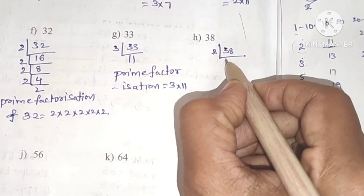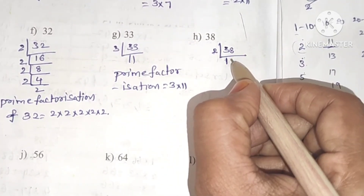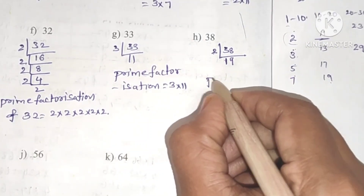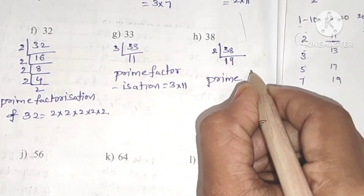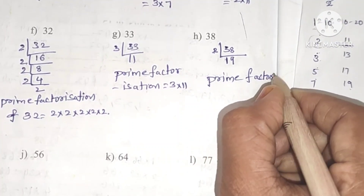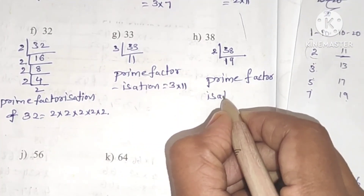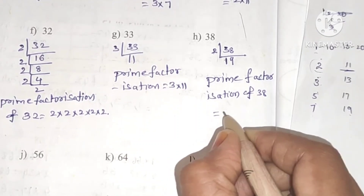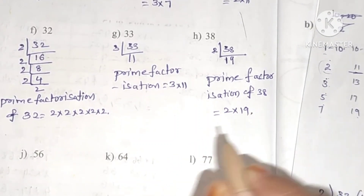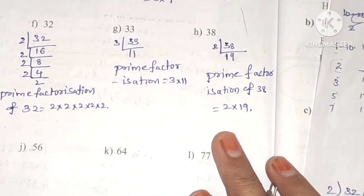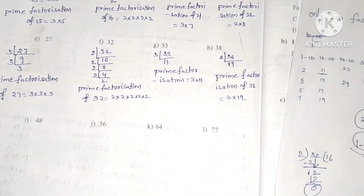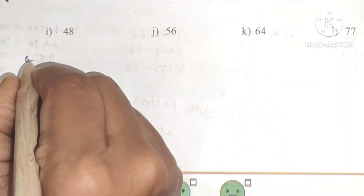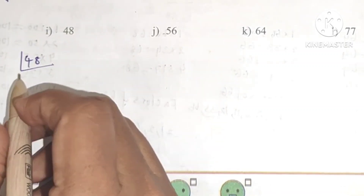For 33, the first prime number 2 does not divide it, so we try 3: 3 elevens are 33. Since 11 is a prime number, prime factorization of 33 is 3 into 11. For 38, units place 8 is divisible by 2: 2 nineteens are 38. Since 19 is a prime number, prime factorization of 38 is 2 into 19.